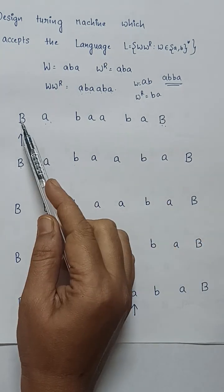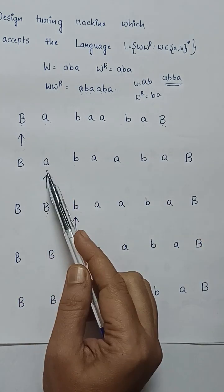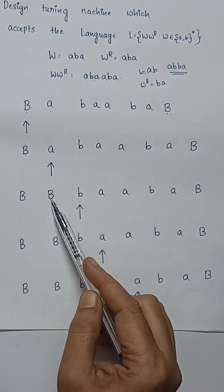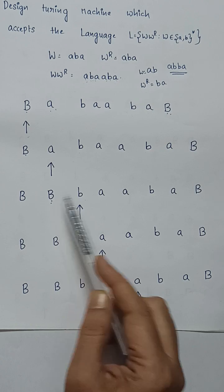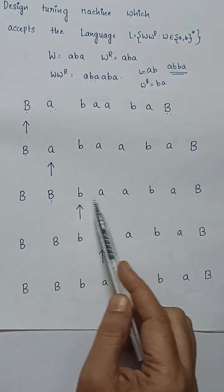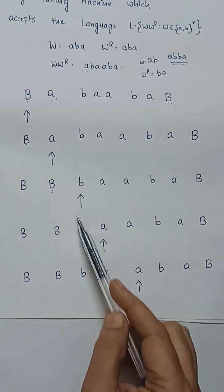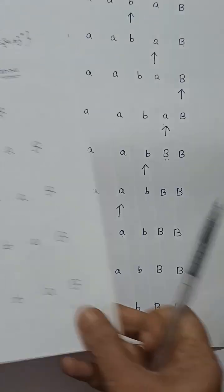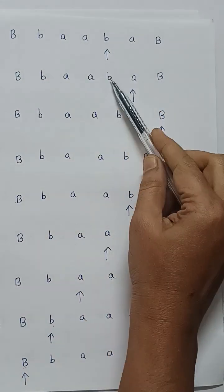Now, the first 'a' to be counted: replace 'a' with capital B, meaning that first 'a' input symbol is read. Then whatever input symbols come, you just read and write: B with B, a with a, a with a, then read B, write B, read a, write a, read B, write B.